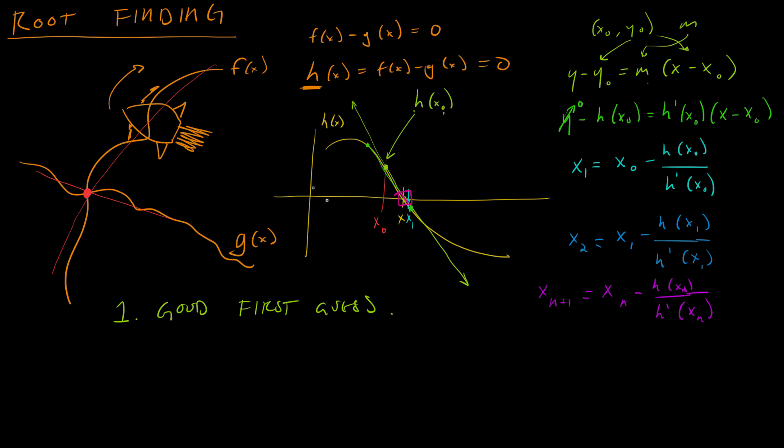And so as an example of what happens if you have a bad first guess, let's use this point as our first guess. It's not really far from that point, but you can see the tangent line at this blue point intersects the x-axis way far away from where we want to be. So this would make a bad first guess.